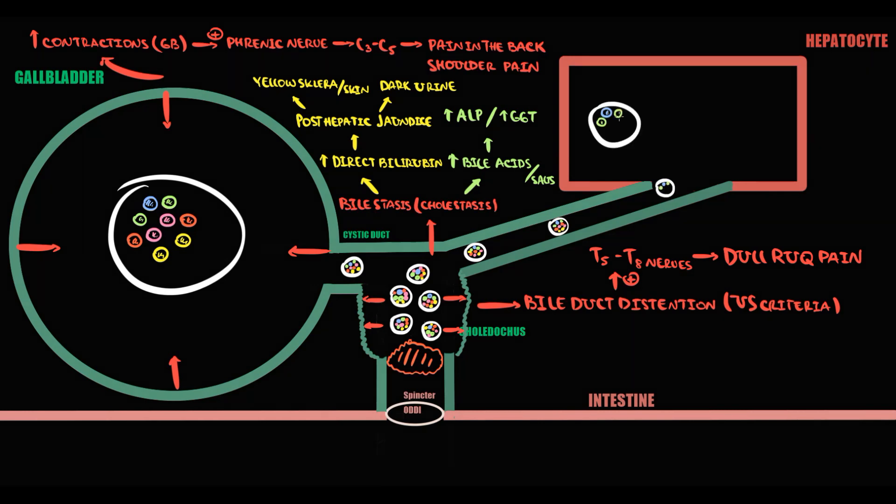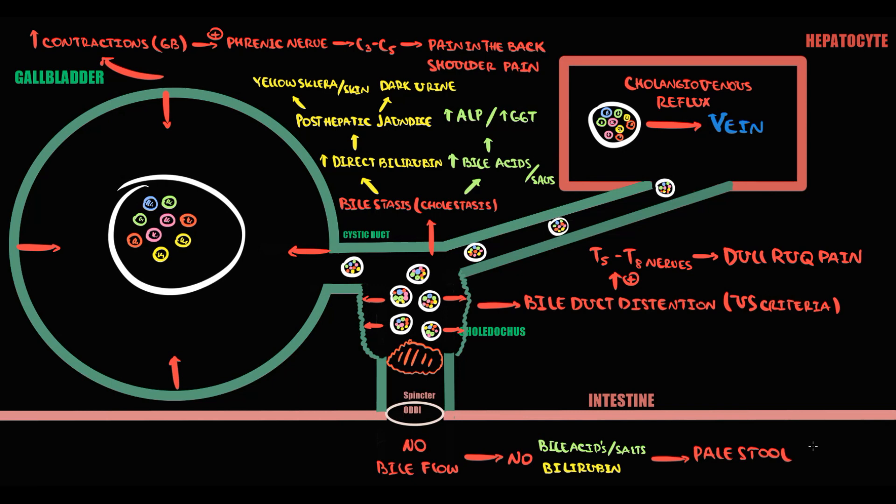At some point, bile accumulates to the point where it leaks into the hepatic vein, and we call this condition cholangiovenous reflux. Without flow of bile acids and bilirubin into the duodenum, stool becomes pale because there are no pigments to give stool a certain color.